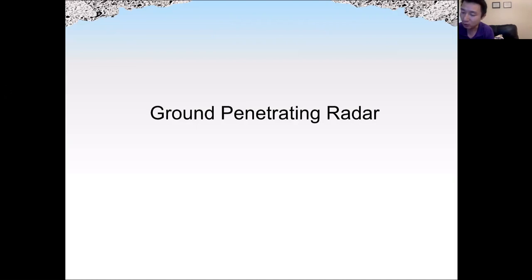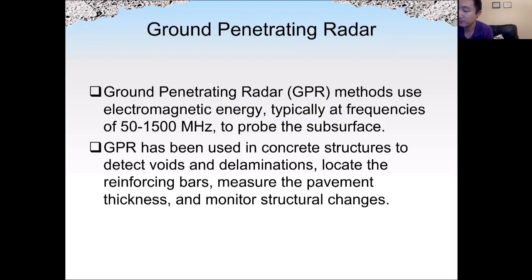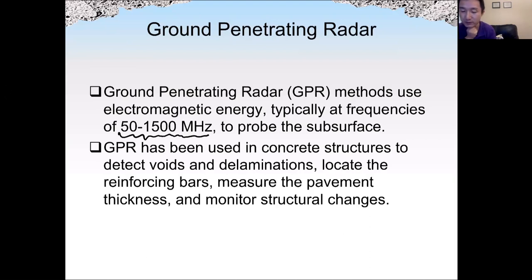The next method is Ground Penetrating Radar (GPR). The cover meter uses low-frequency EM waves, while GPR uses a much higher frequency EM wave — 50 to 1500 megahertz — to probe the subsurface of concrete. GPR sends an EM pulse that lasts a very short period of time, just one to three nanoseconds.